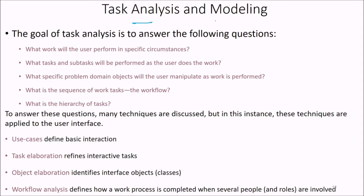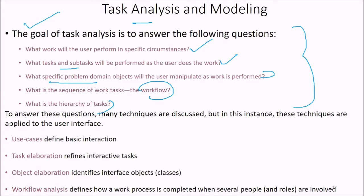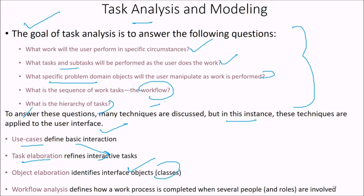Task analysis and modeling addresses questions like: What work will the user perform in specific circumstances? What tasks and subtasks will be performed? What problem domain objects will the user manipulate? What is the workflow sequence and the hierarchy of tasks? Techniques applied include use cases to define basic interaction, task elaboration to refine interactive tasks, object elaboration to identify interface objects or classes, and workflow analysis to define how a work process is completed and the roles people perform.